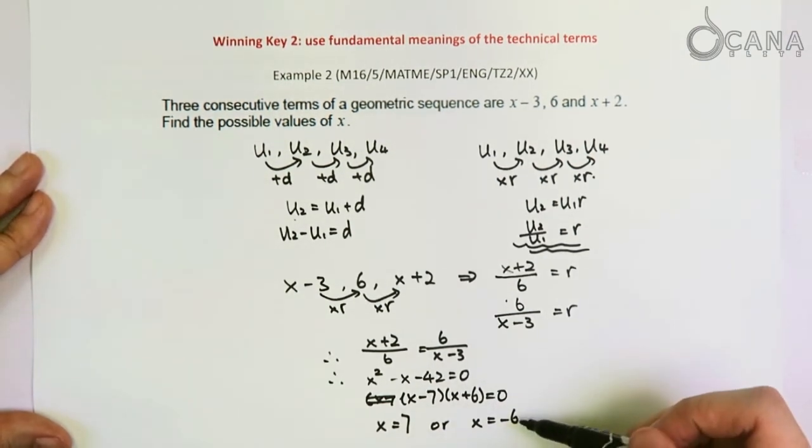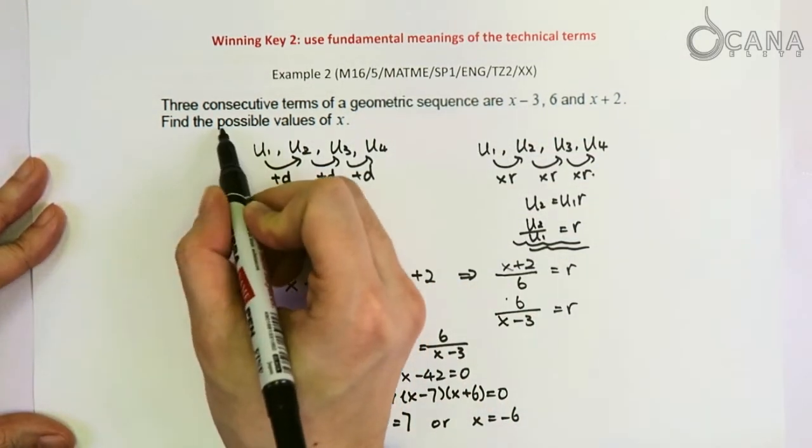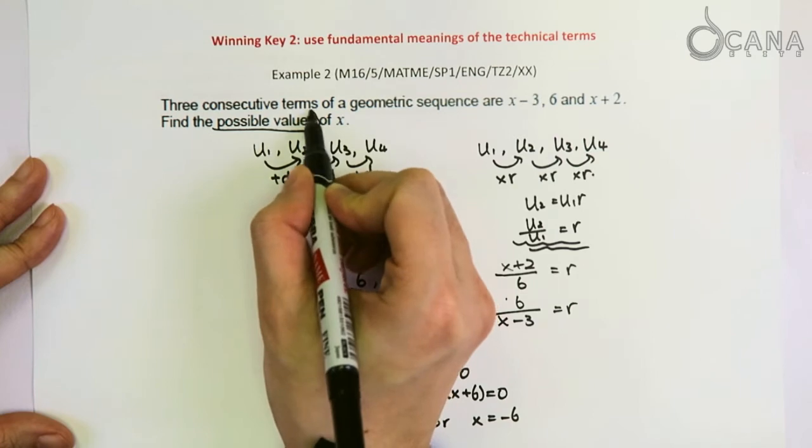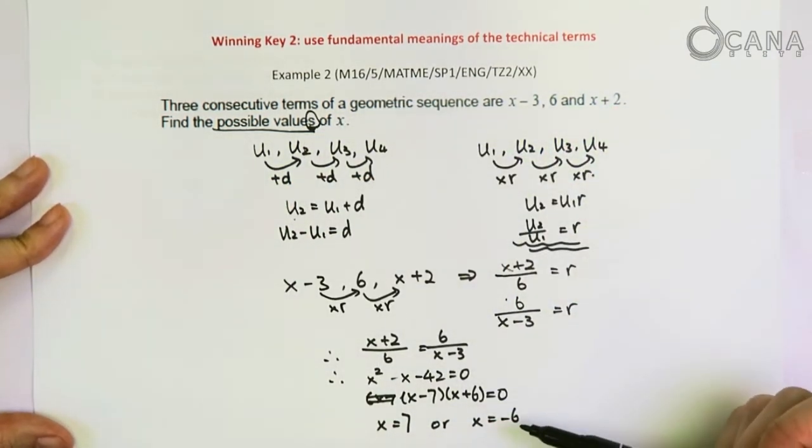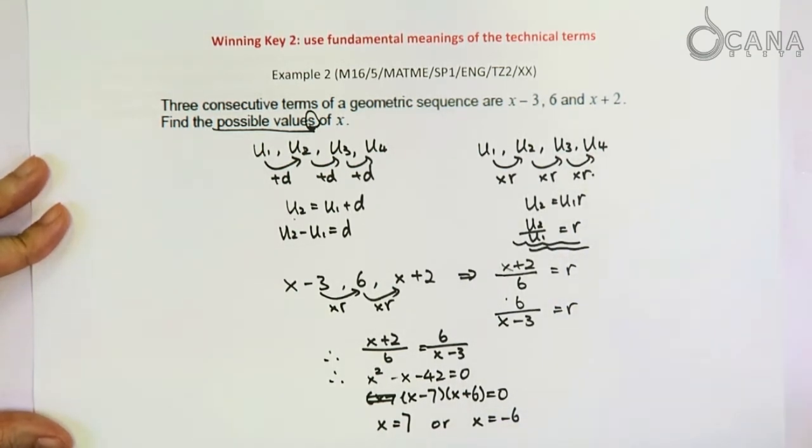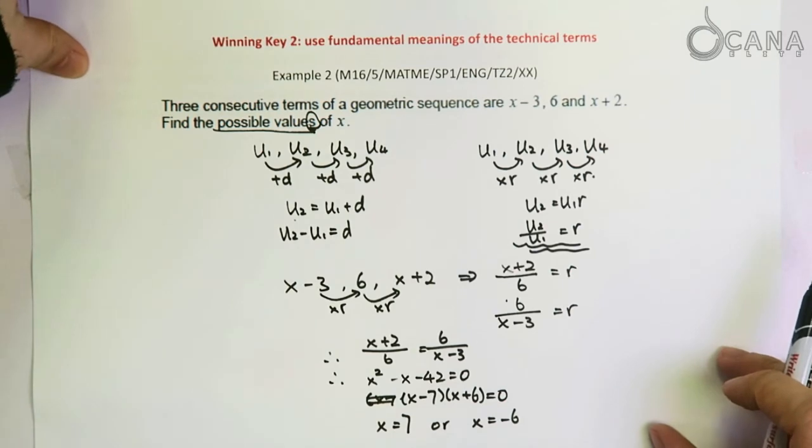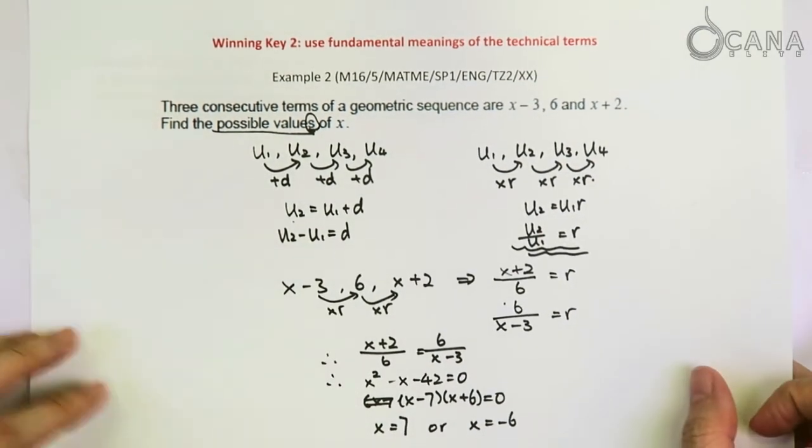And this is consistent with how the question is asked, because the answer is to find the possible values. That means you must have at least one answer. If you have only one, then you must be doing something wrong and you should check your steps. This is how we apply the second technique.